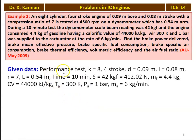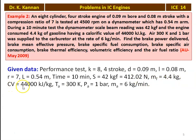Given data: k = 8 cylinders, 4-stroke cycle engine, diameter = 0.09 m, stroke length = 0.08 m, compression ratio = 7, brake arm length = 0.54 m, test duration = 10 minutes, scale reading = 42 kgf = 412.02 N (converting by multiplying by 9.81), mass of fuel = 4.4 kg, calorific value = 44,000 kJ/kg, air temperature = 300 K, pressure = 1 bar, mass of air = 6 kg/min.